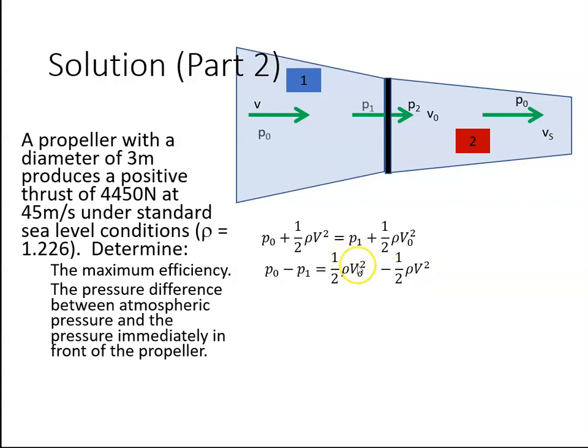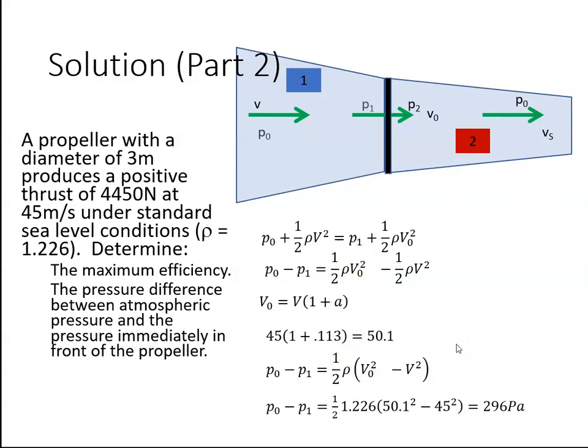We have V, we have rho, we just need to get V0 squared. The velocity in here is V times 1 plus A, this inflow factor. We calculated A to be 0.113, so V0 turns out to be 50.1. I'm going to plug that into this equation. I've just taken half rho out, and that works out to be 296 pascals. That's that solution. It wasn't too difficult in the end.